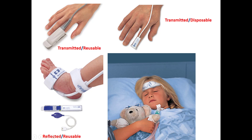Also transmitted and reflected types. In the transmitted type, the LEDs and the source are facing each other, whereas in the reflected type, both the source and detectors are on the same side. This is an application for the reflected SpO2 sensor to measure blood oxygen saturation.